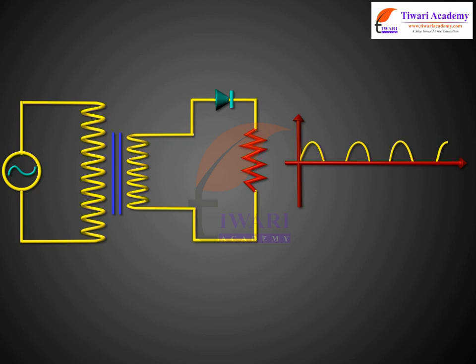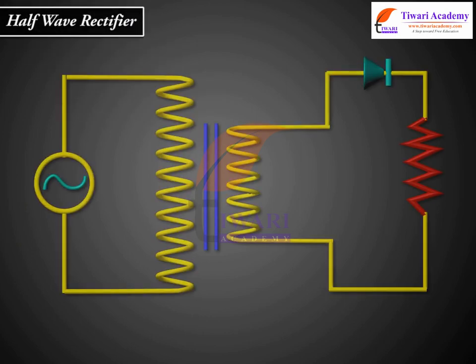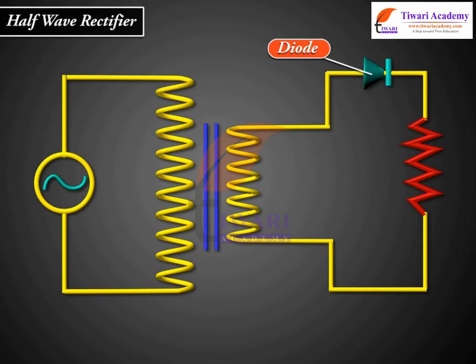Such a rectifier circuit as shown is called a half-wave rectifier. In the half-wave rectifier circuit, only one diode is used.